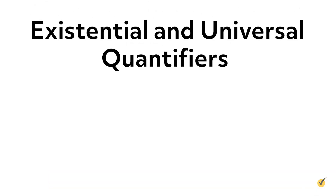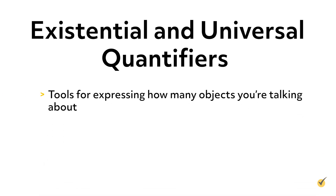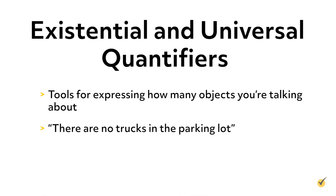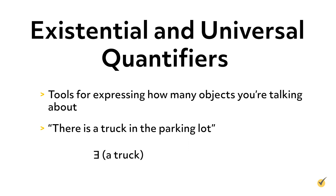A couple of final concepts that will help you in logic problems and proofs are existential and universal quantifiers. These quantifiers are simply tools for expressing how many objects you're talking about. For example, 'there are no trucks in the parking lot' could be negated if there was at least one truck. If we did find a truck, we could say 'there is a truck in the parking lot.' In logic, we use the existential quantifier — a backwards E symbol — as shorthand for the words 'there is' or 'there exists' or 'there is some.'